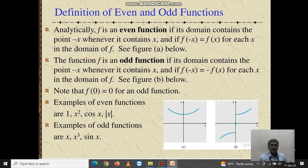What is meant by even function and odd function? Analytically, f is an even function if its domain contains the point minus x whenever it contains x, and if f(x) equals f(minus x) for each x in the domain of f. The function is an odd function if its domain contains the point minus x whenever it contains x, and if f(minus x) equals minus f(x) for each x in the domain of f.